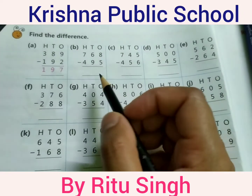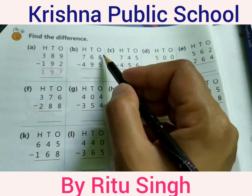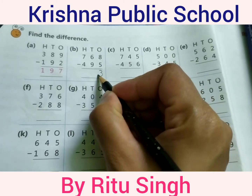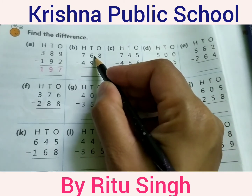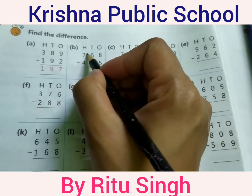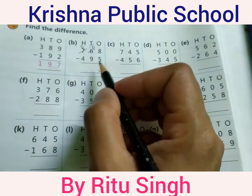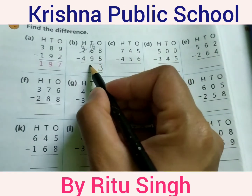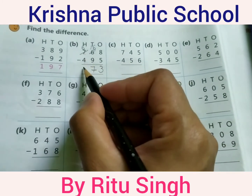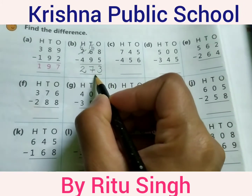Page number 46. Find the difference. 8 minus 5 equals 3. 6 minus 9 — 6 is a smaller digit compared to 9. Borrow from 7, making it 16. 16 minus 9 equals 7. 6 minus 4 equals 2. Your answer is 273.